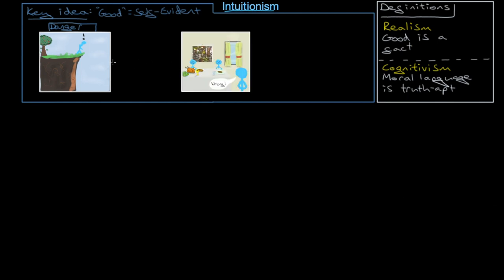Danger is a fact in the world that you can perceive. Well with our example from earlier you can perceive also in this case badness. So for an intuitionist then morality is a fact in the world and we perceive it. We see it. We perceive it in the world.